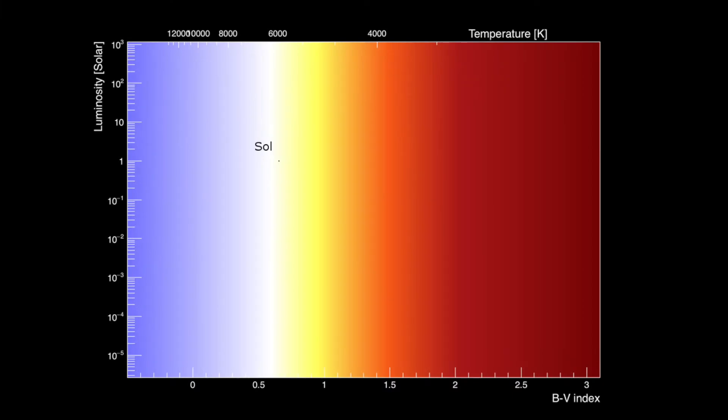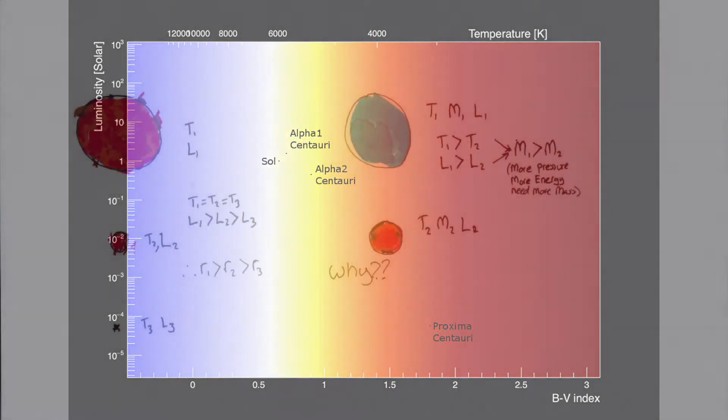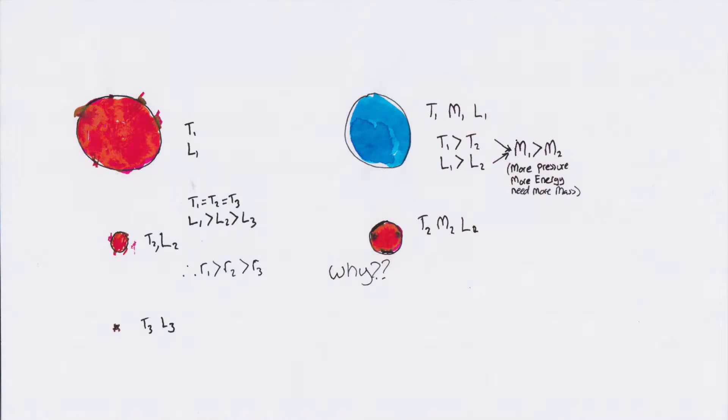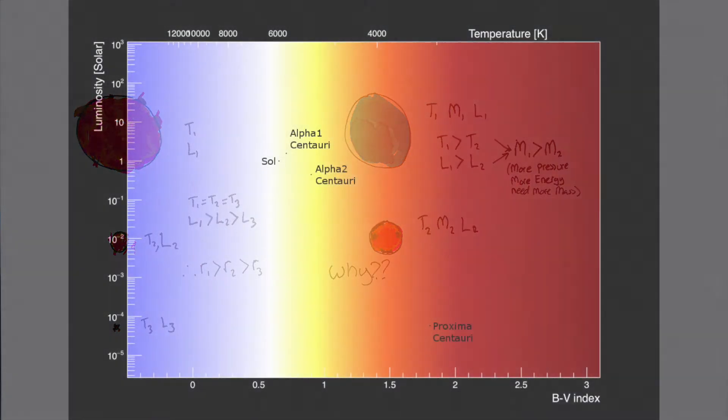This is our sun, or Sol. Let us add our neighbors, Alpha 1, 2, and Proxima Centauri. With logical reasoning, we can say the following. Stars of the same temperature that have drastically larger luminosity must thus have a larger radius. For a star to be hotter or cooler, it means they must have higher or lower mass, respectively.